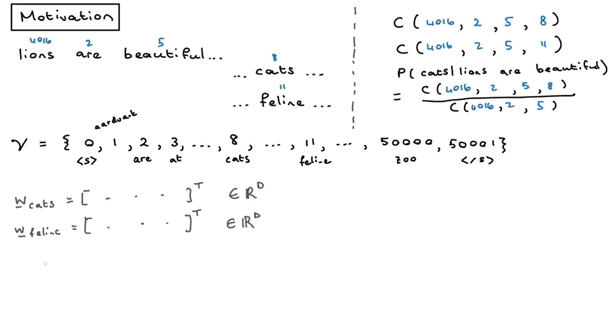So for instance, cats and feline might be vectors that are quite far away from a completely unrelated word like, I don't know, liar. I'm saying they're unrelated, but if you've watched the Lion King, then maybe liars and lions, there's some very complicated relationship there. But this is basically the intuition behind word embeddings, which would be instead of discrete categories, have these continuous representations of words.